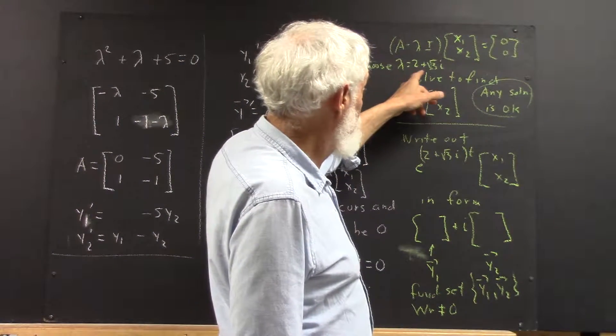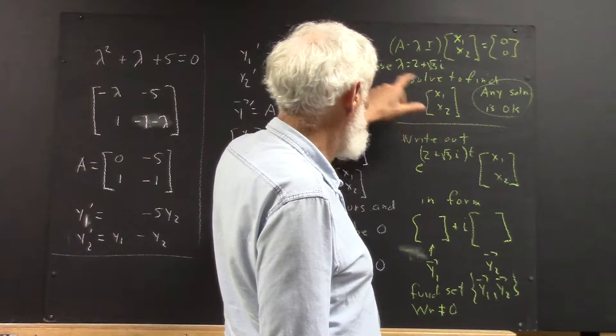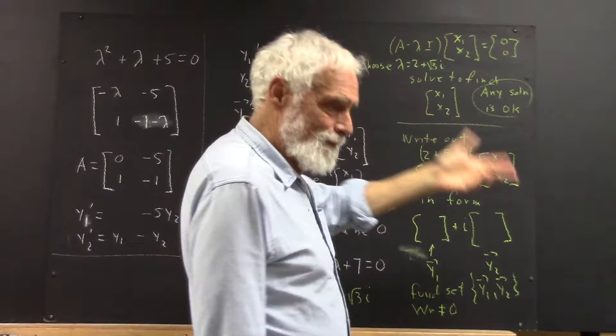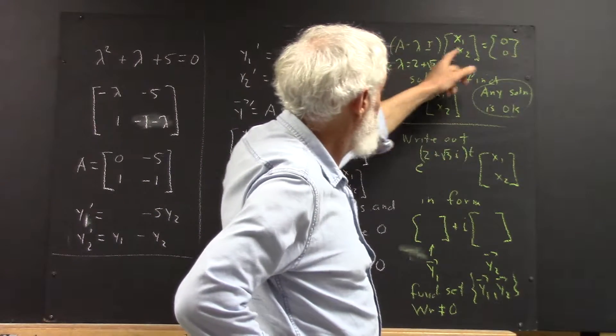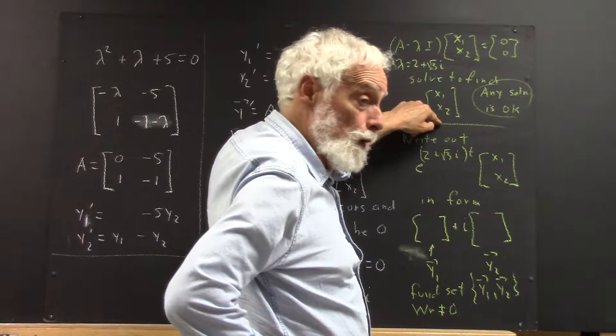We've got lambda equals 2 plus the square root of 3i. We just choose the plus. Again, one less minus sign to worry about. And we solve this equation to find our x1 and x2.